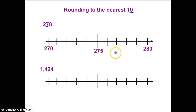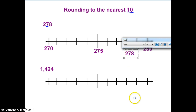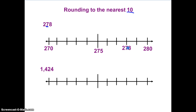Now it's time to actually add 278 to my number line. So if this is 275 — 276, 277, 278 — so 278 goes on the number line. Let's draw a dot so we know that's where we're at. So 278. Remember, I am rounding to the nearest ten, and I have my number line set up here.